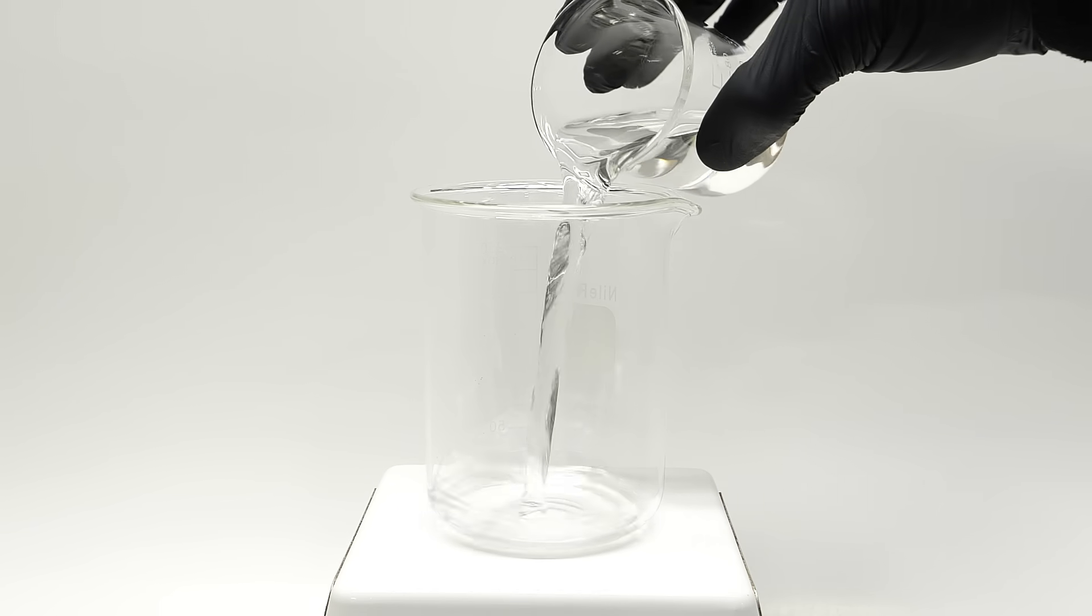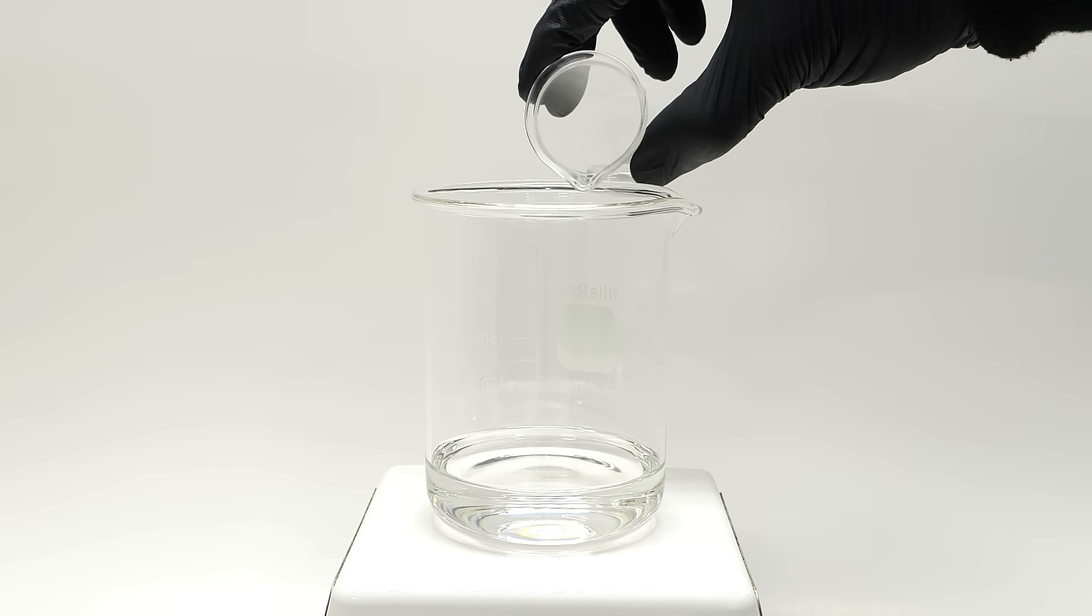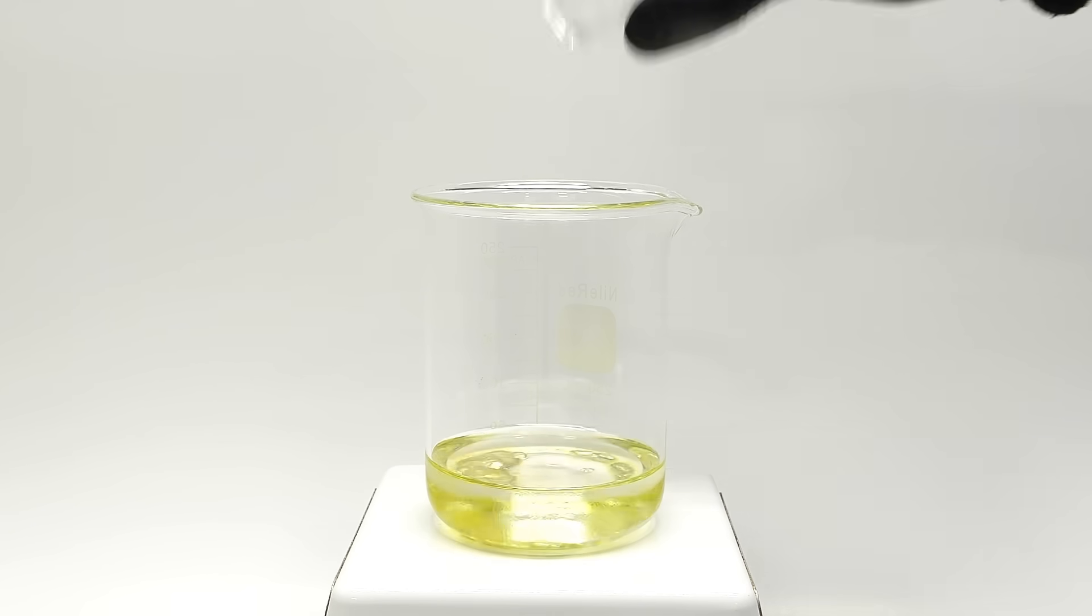To get started, the first thing I'll need is some concentrated nitric acid. Then into this I'll add a small amount of the mercury metal.